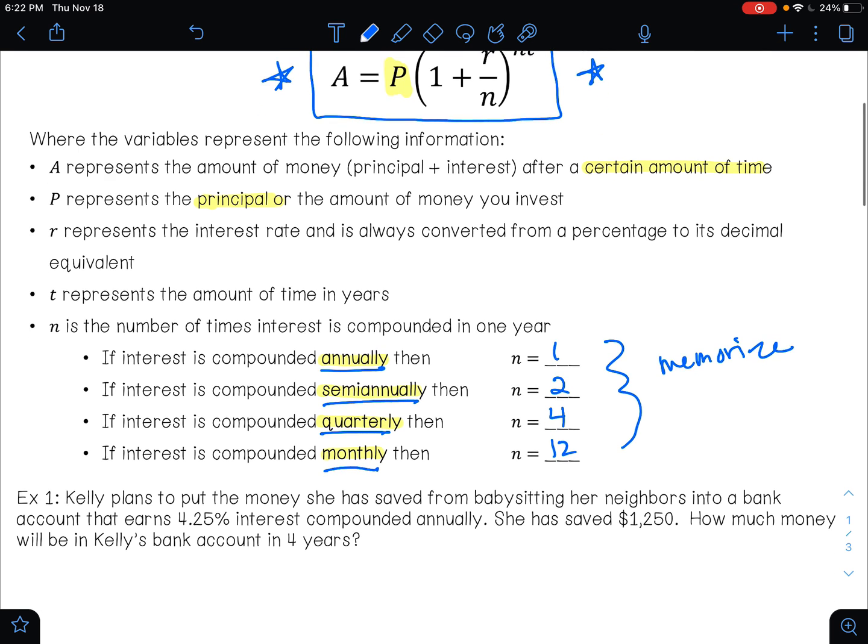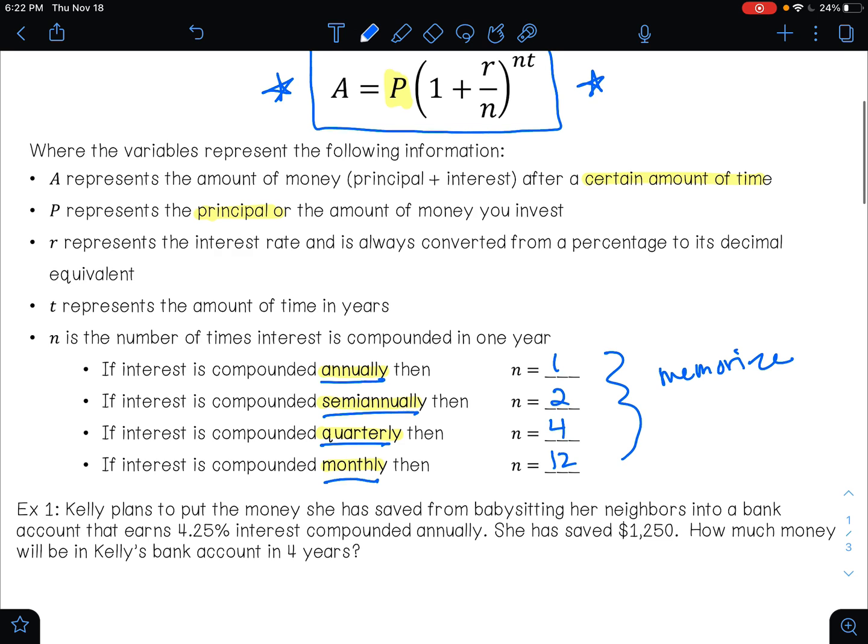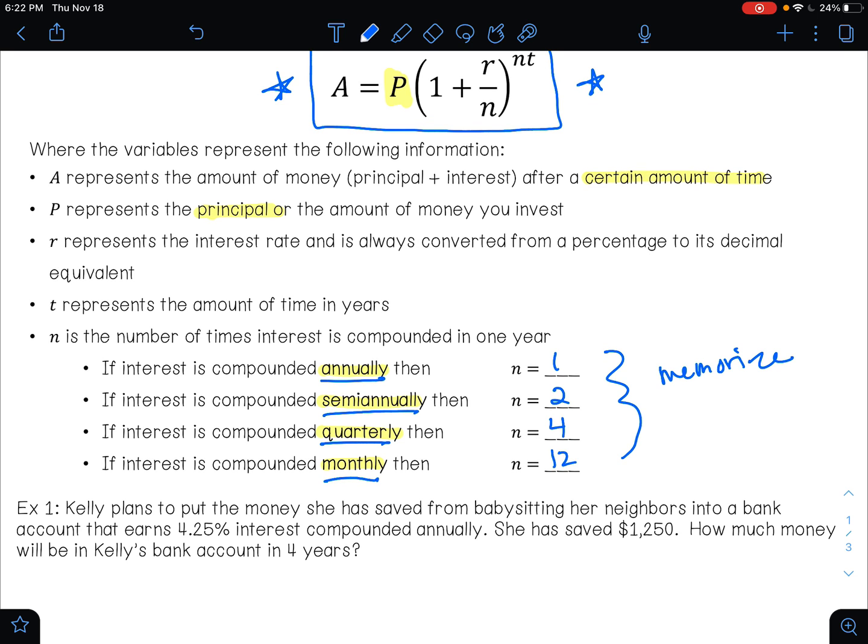So let's look at an example. It says Kelly plans to put the money that she has saved from babysitting her neighbors into a bank account that earns 4.5% interest compounded annually. She has saved $1,250. How much money will be in Kelly's bank account in four years? So let's identify what we know.